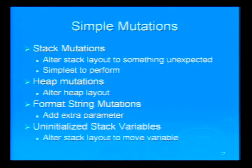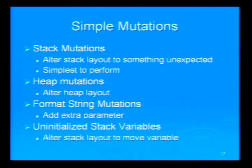Some simple mutations we can deal with: the ones that are easiest involve stack mutations, which simply alter the stack layout to something other than the stock layout. There are also simple heap mutations you can do without adding a lot of extra code. The goal is to just alter the heap layout so it looks different than what the attacker expected, since some exploits require very specific knowledge of where overwrite code will land. Format string mutations are getting harder. And uninitialized stack variables — we hope to alter the stack layout to move the uninitialized variable.